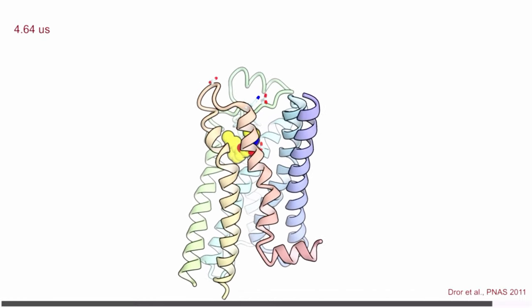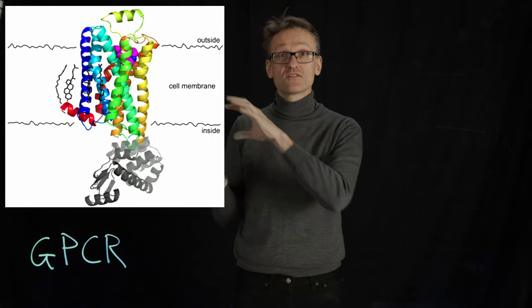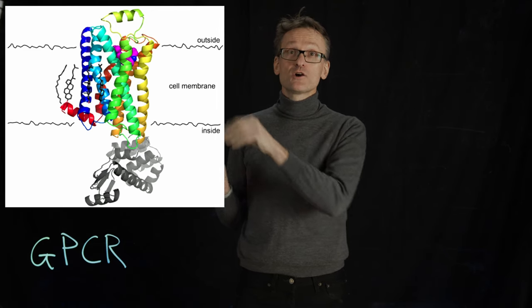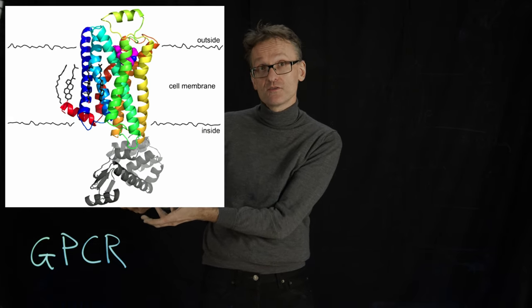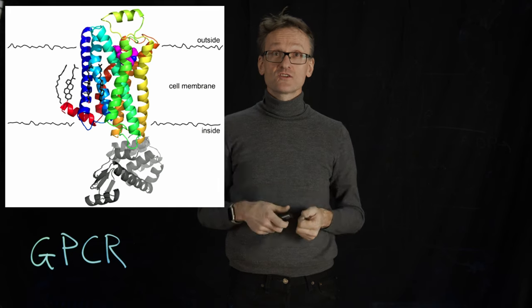This is changing the entire conformation of the helices. Eventually you saw one of the helices move out. In this particular case, we only had the central part of the channel, but this helix moving out is what's going to create the chain effect with the entire interior part of the protein, causing something to happen on the inside of the cell.